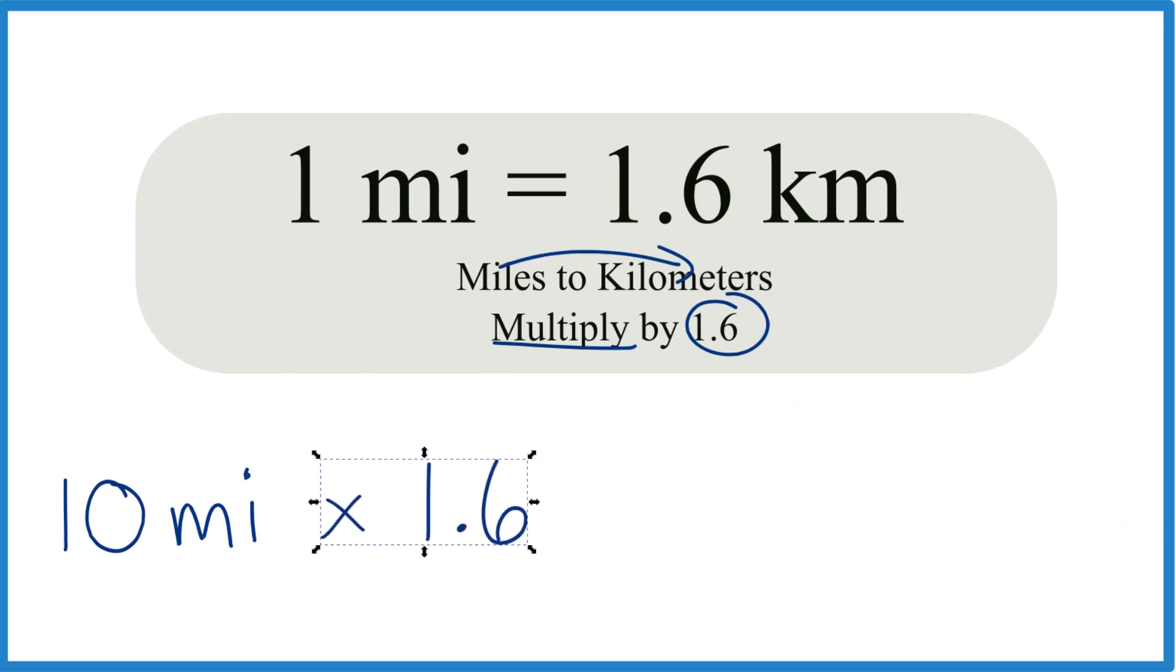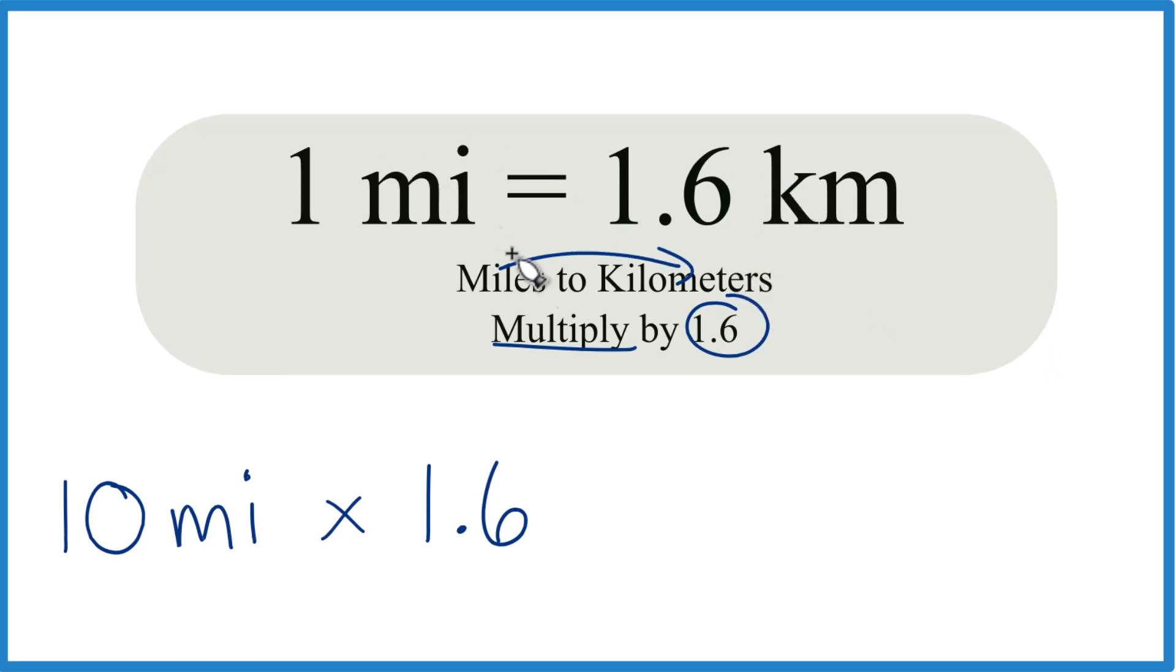multiply by 1.6, but that's 1.6 kilometers per mile. So we're going to write kilometers over 1 mile. And what's nice is we multiply 10 times 1.6, that's 16.